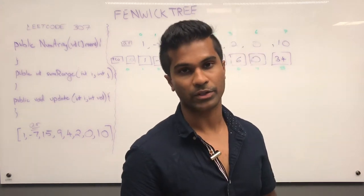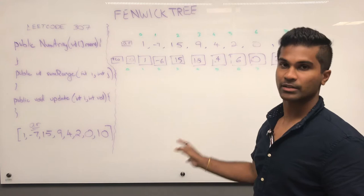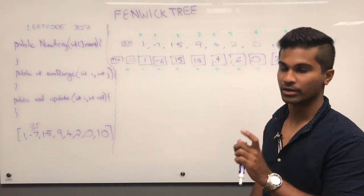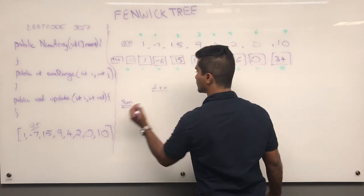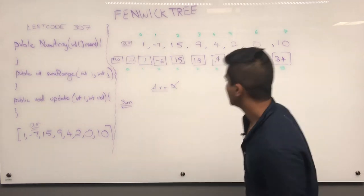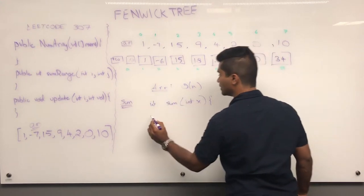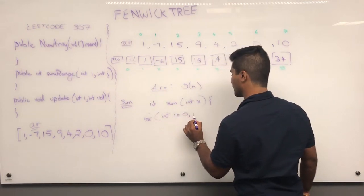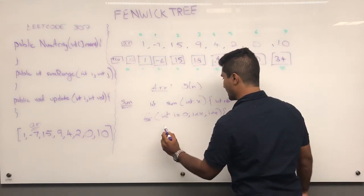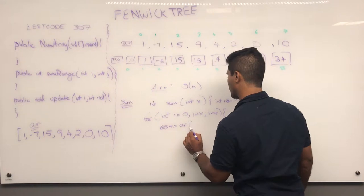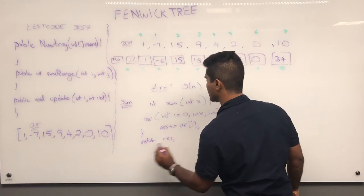Let me remind you why we even started using Fenwick Tree in the first place — the two functions, sum and increment, on a regular integer array. Now I'm going to write them out side by side so you can see how it's done with an integer array and how it's done with a Fenwick Tree array. For a regular array, sum is O(n): int sum(int x), result = 0, for loop incrementing result by ar[i], return result.